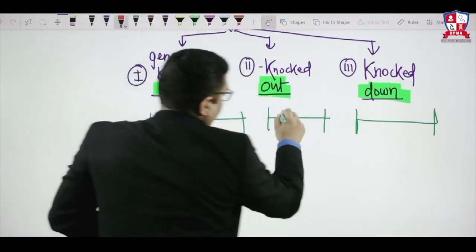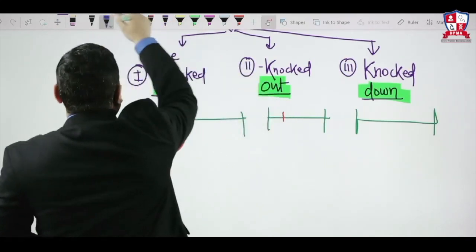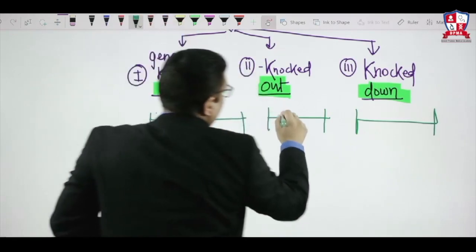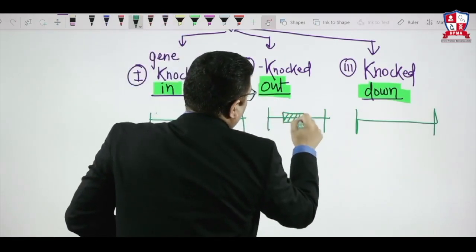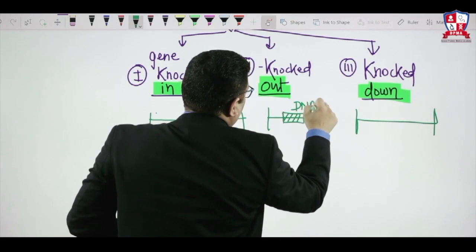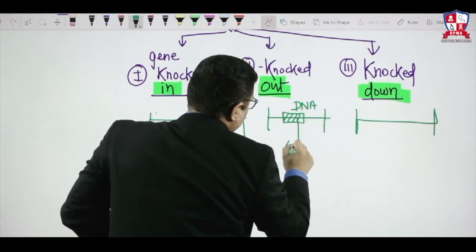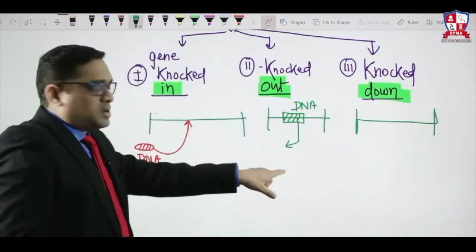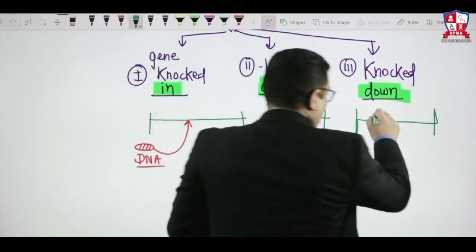But when we are removing, see this. This is the DNA here which is present in this gene. When you are removing the gene, this is called Knocked Out. You are removing it.